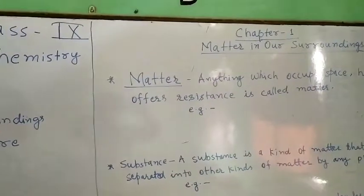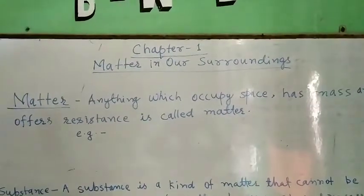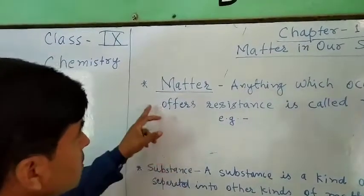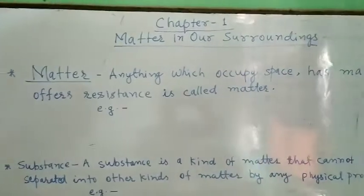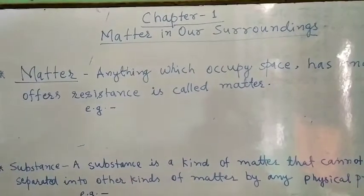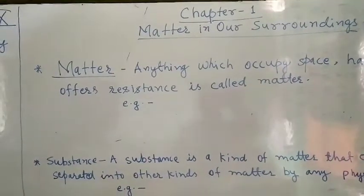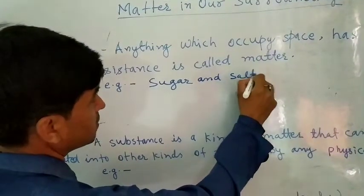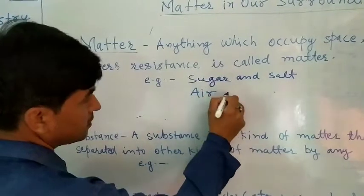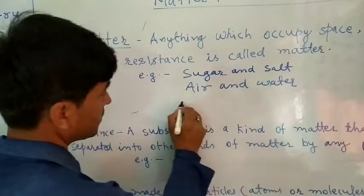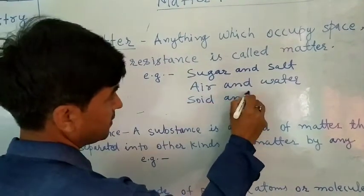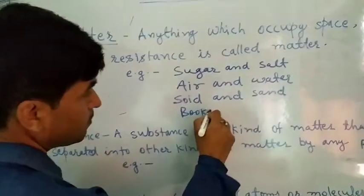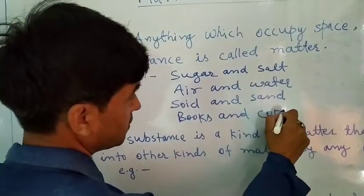Now we have to explain Chapter 1: Matter in Our Surroundings. First of all we have to know about matter. What is matter? Anything which occupies space, has mass and offers resistance is called matter. For example, sugar and salt, air and water, soil and sand, books and copies, etc.